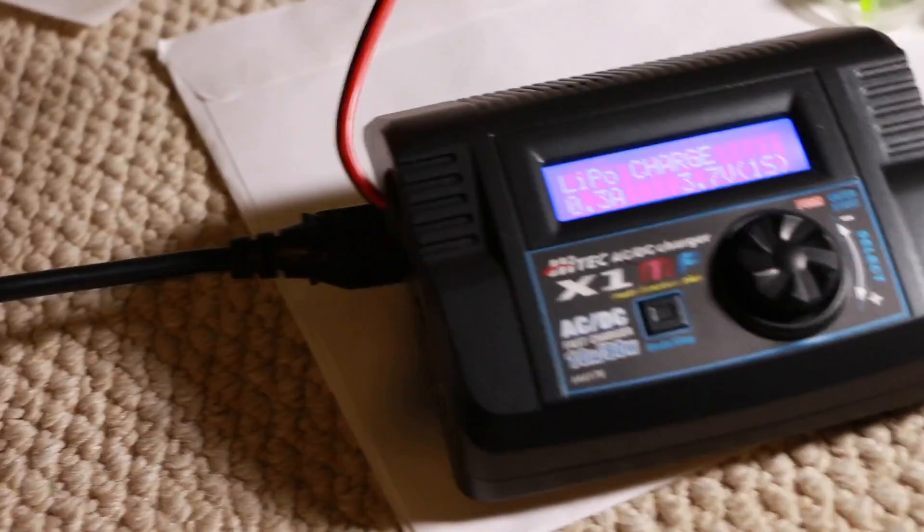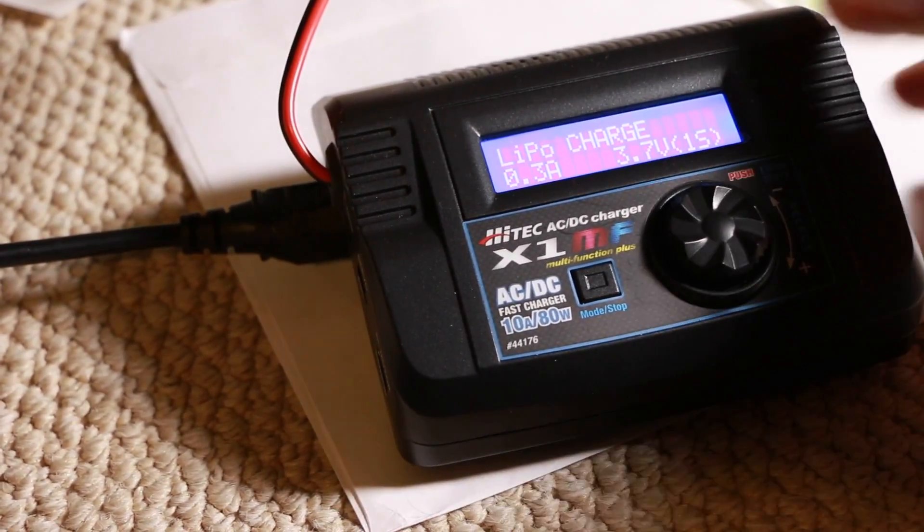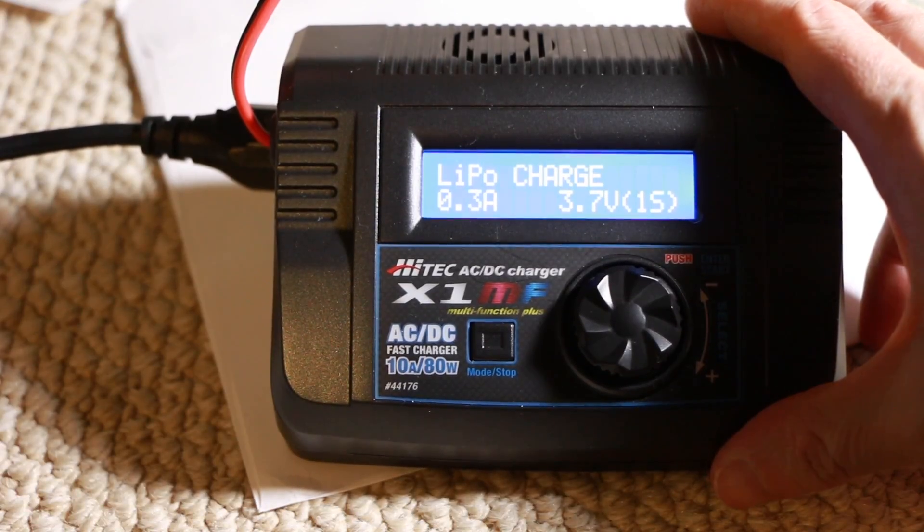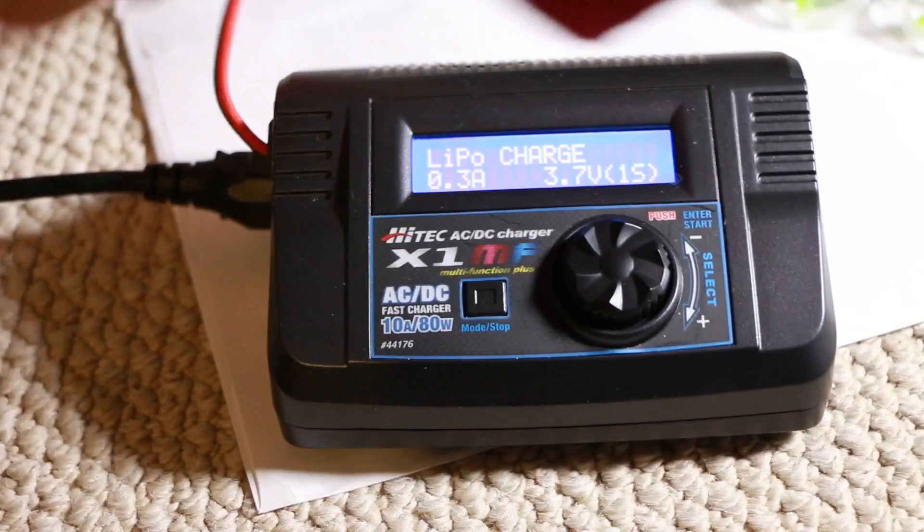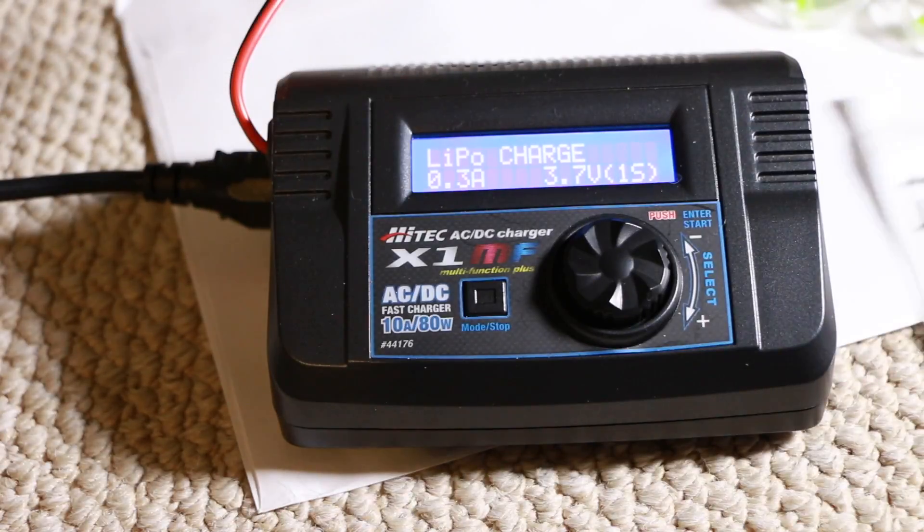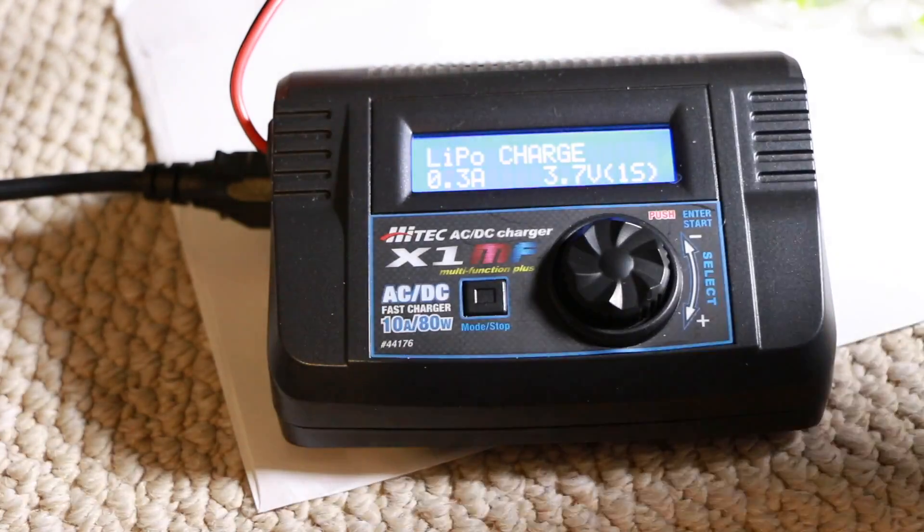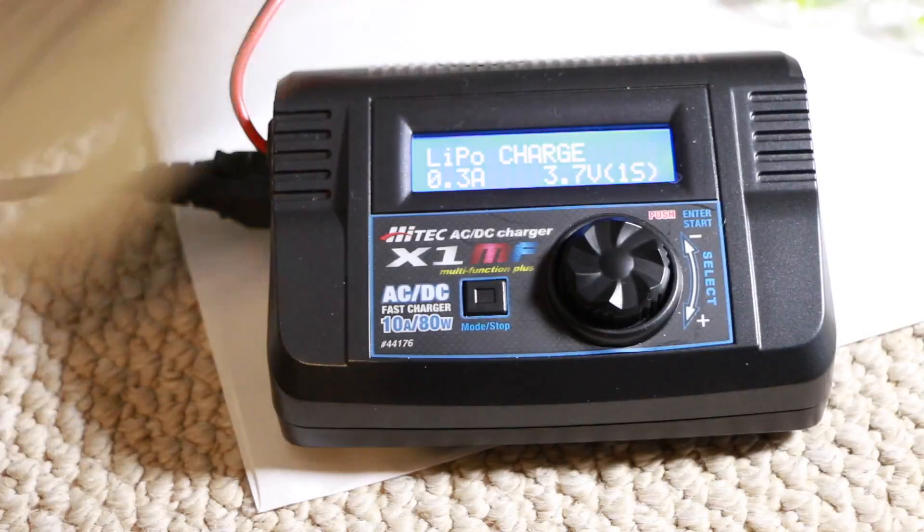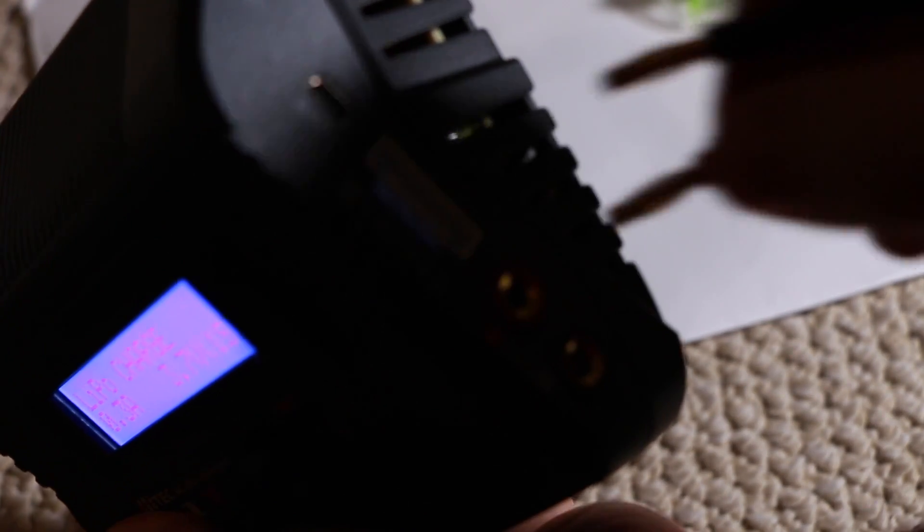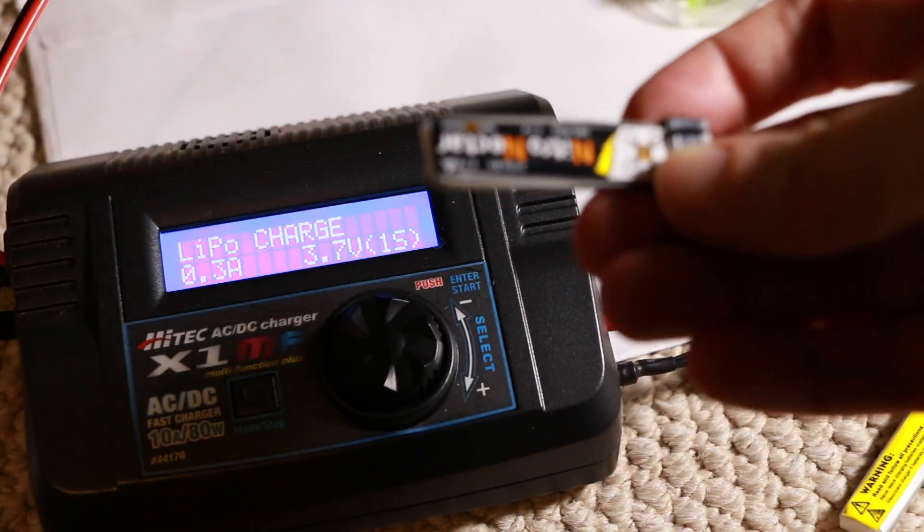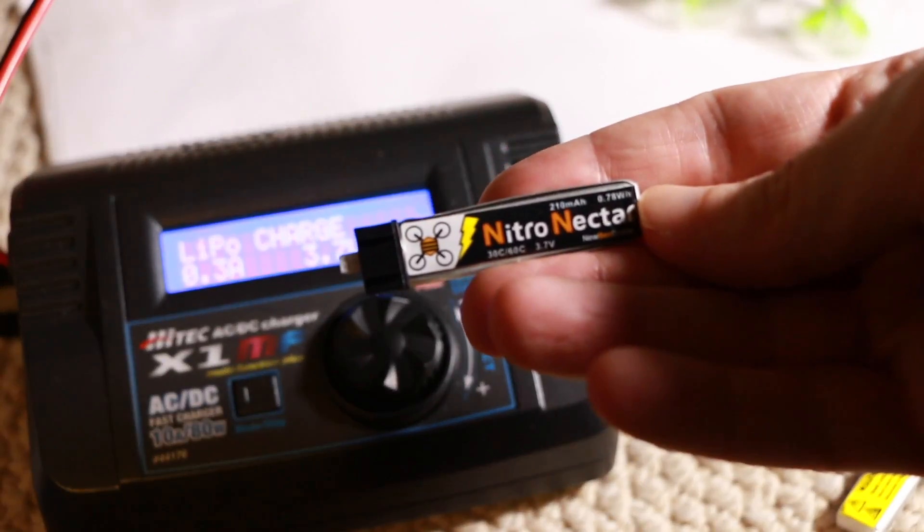The other thing that you're going to need is a charger for your batteries. So in this particular case, I have this charger, this X1 multifunction charger from Hitek. And I also have, and because the tiny whoop, here's a connector for it that I can plug into the side. And so it would go into, there's some ports here on the side. Let the camera focus on that. Here's the positive. Here's the negative. I use the batteries called the Nitro Nectar. Let me flip that over for you. There's the Nitro Nectar.